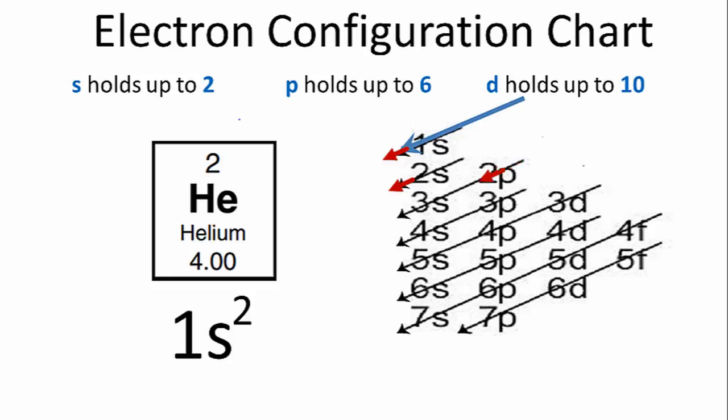We have the 2s, the 2p, and the 3s, and so on. This is Dr. B with the electron configuration for helium, and thanks for watching.